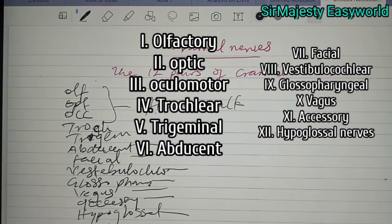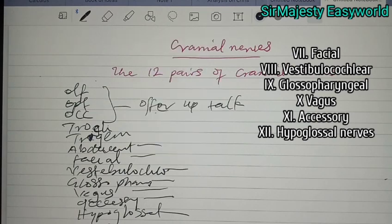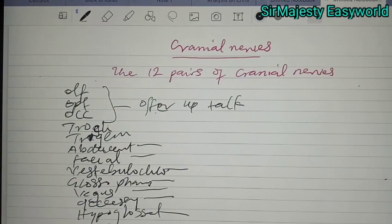The other 31 pairs originate from the spinal cord and hence they are called spinal nerves. Their transmissions from the head will be explained clearly when we discuss the cranial bones. Stay subscribed to this channel, medical students.